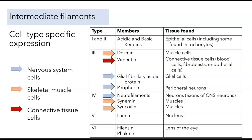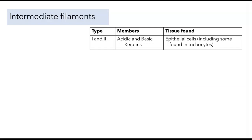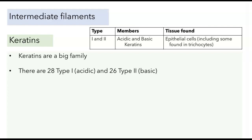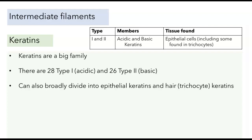By far the biggest class of intermediate filaments are the keratins, type 1 and 2. We know more about keratins than any other intermediate filament, and studies on keratin have informed much of our understanding of how intermediate filaments are assembled and how they work. There are 28 type 1 (acidic) keratins and 26 type 2 (basic) keratins in the human genome. We can broadly divide them into epithelial keratins and hair keratins. Trichocytes are a special form of epithelial cell that secretes fingernails and hair, and those express a distinct set of keratins from the epithelial cells making up skin or lining the digestive tract.